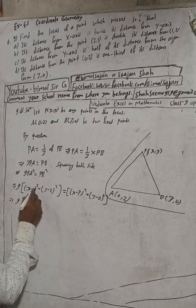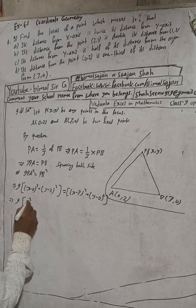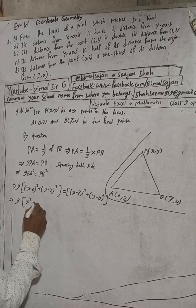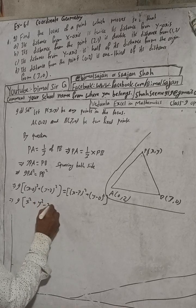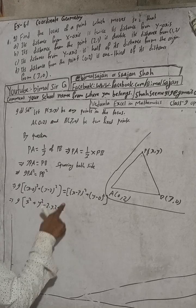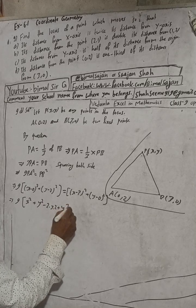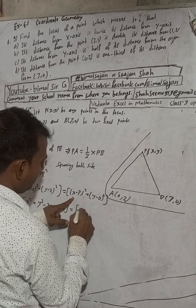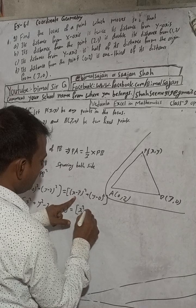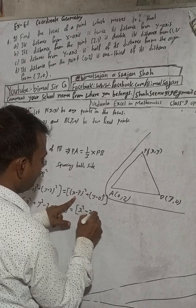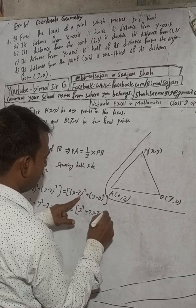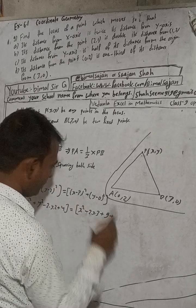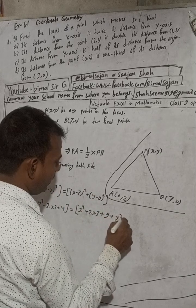Expanding the left side: (x - 0)² is x², and (y - 2)² is y² - 4y + 4. On the right side: (x - 3)² is x² - 6x + 9, and (y - 0)² is y². So we have x² + y² - 4y + 4 on the left, and x² - 6x + 9 + y² on the right.